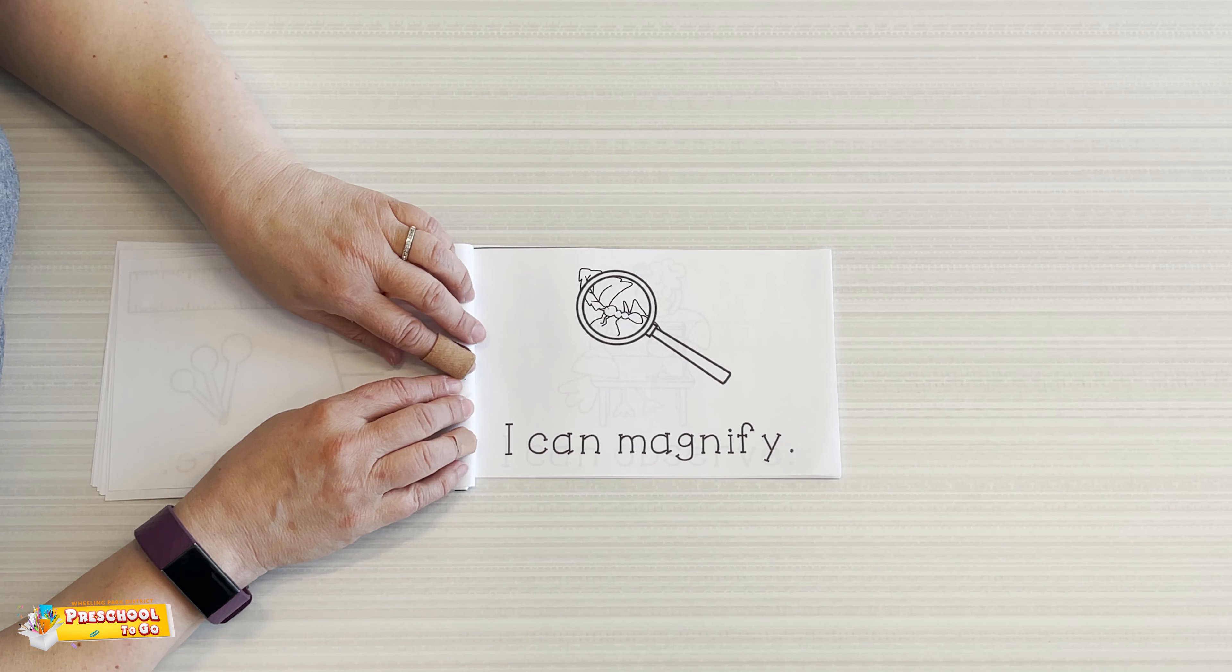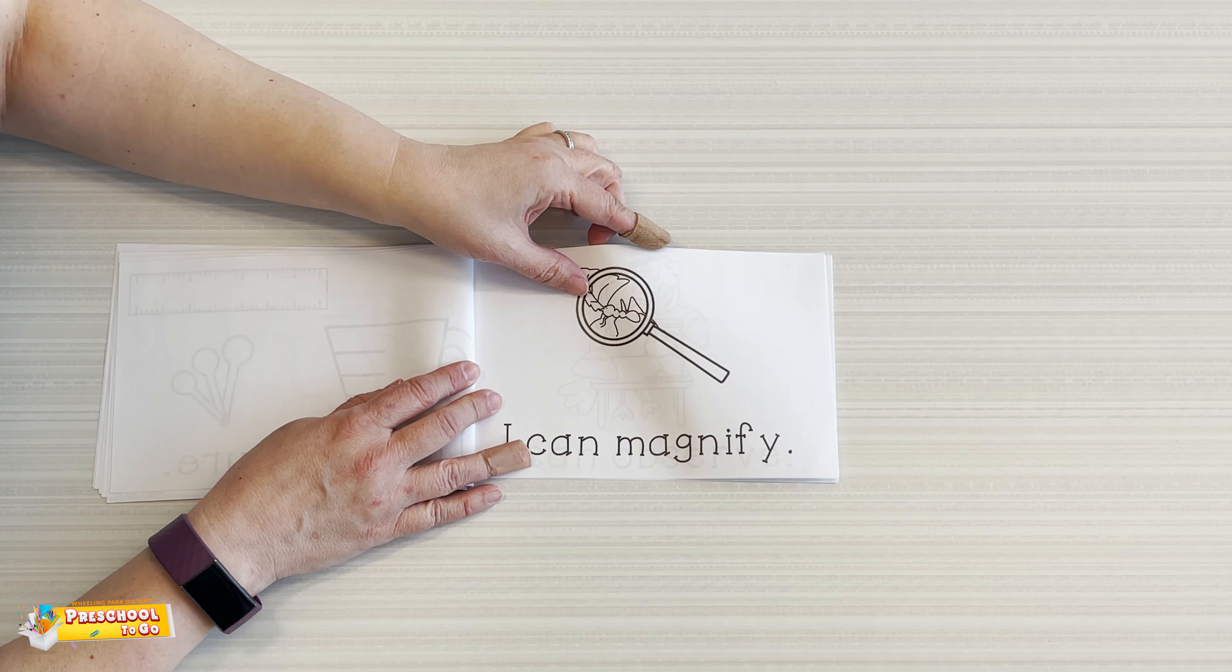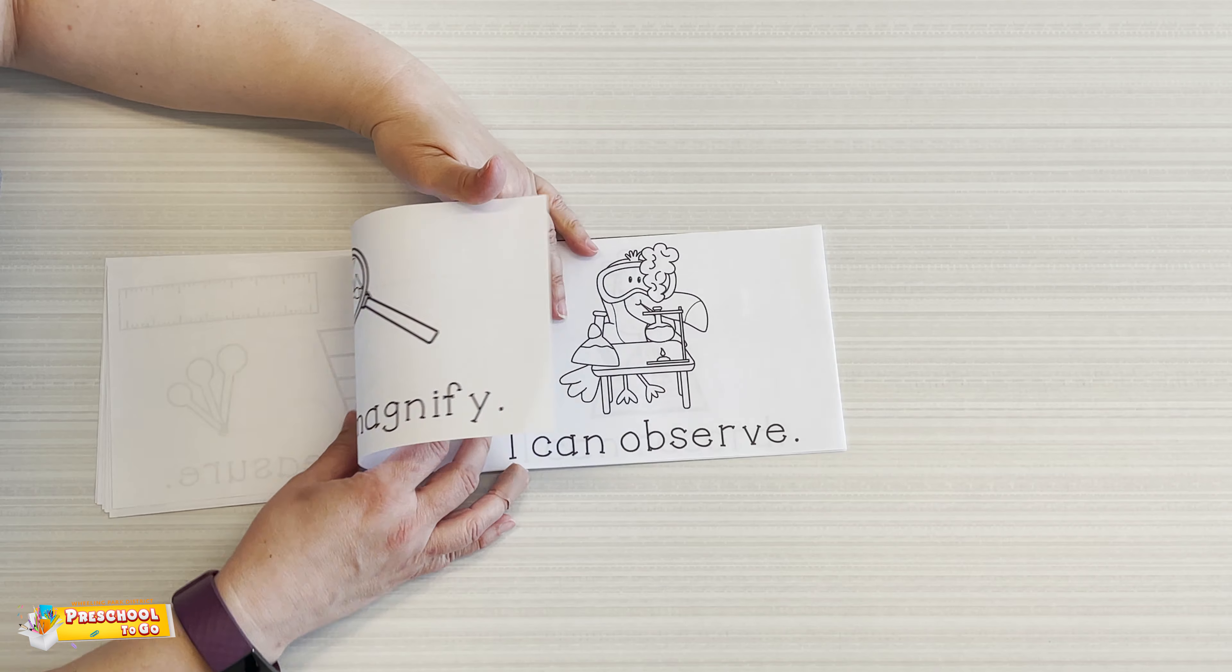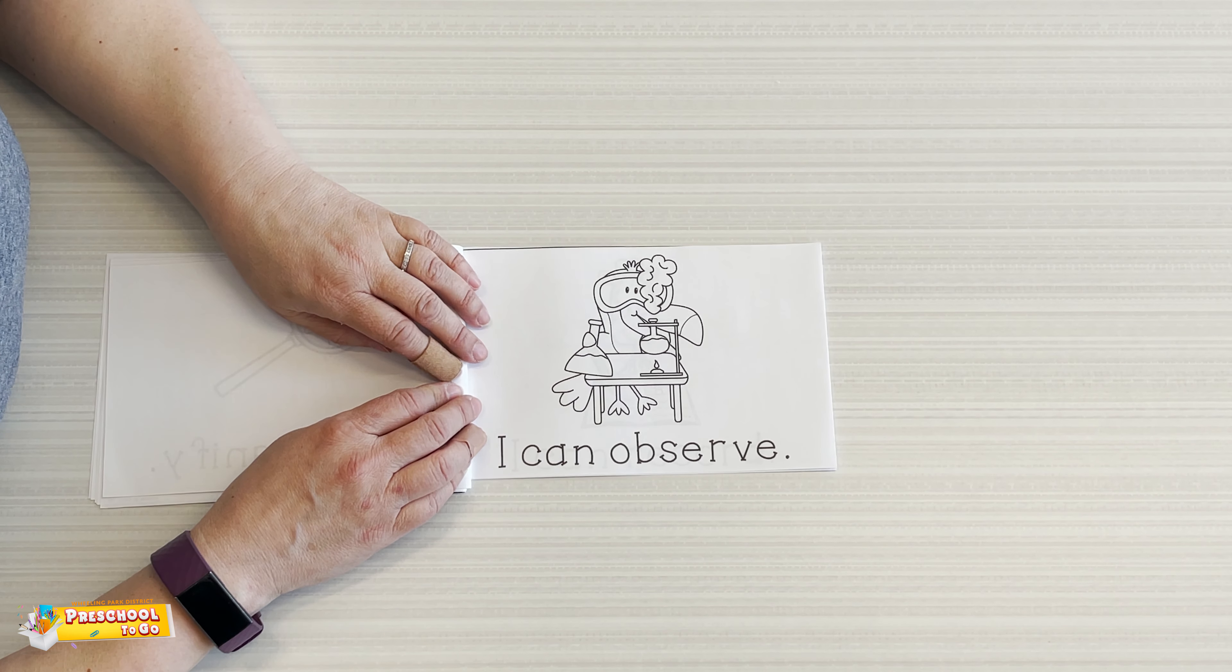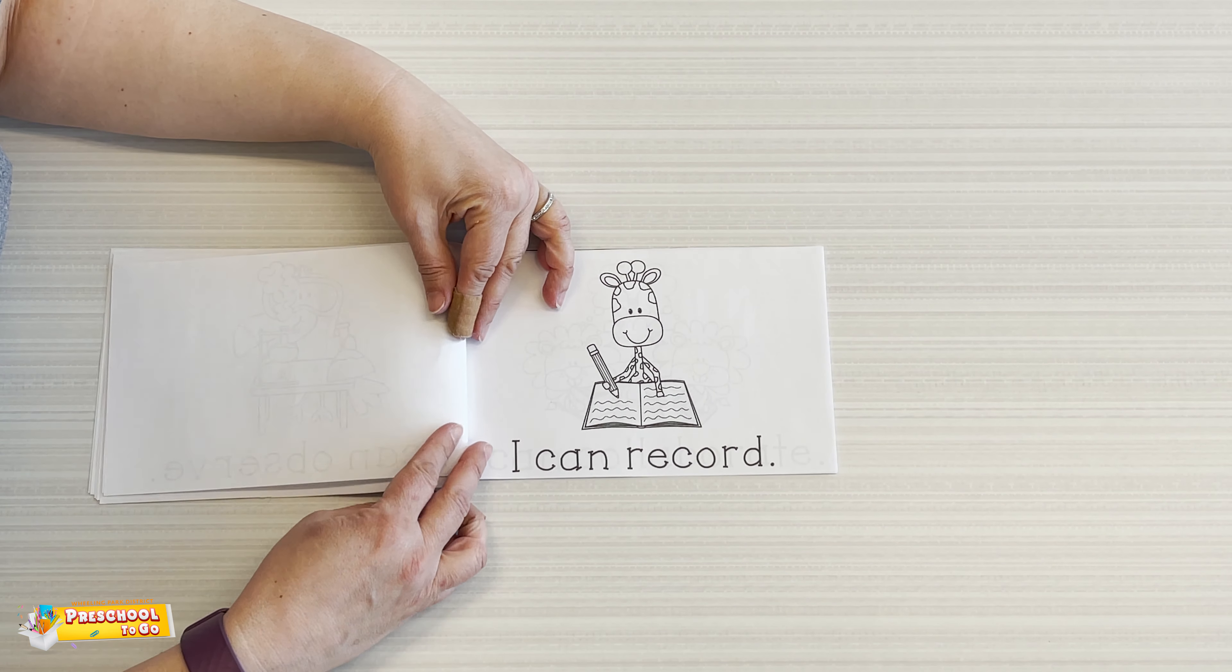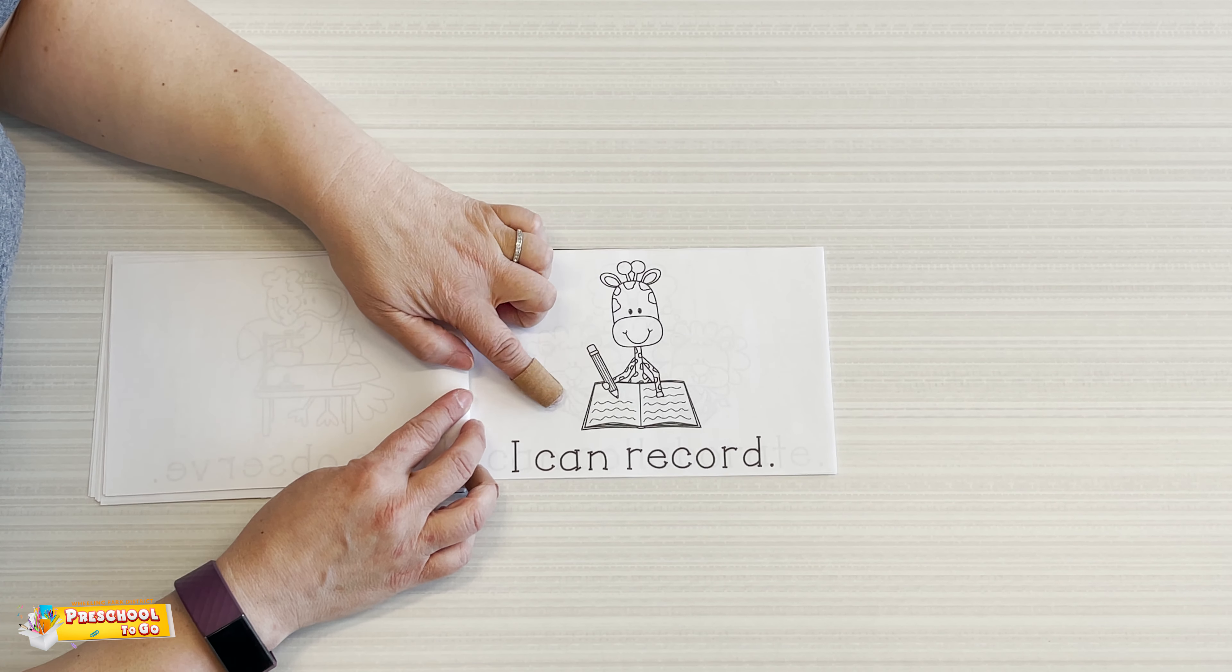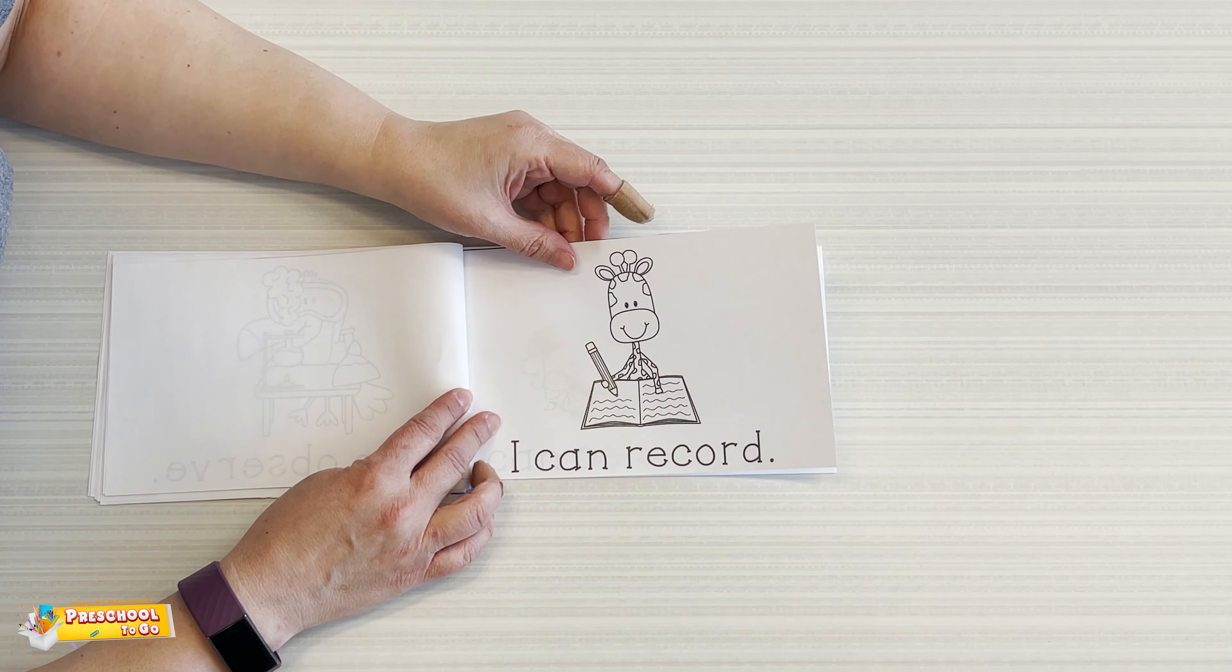I can magnify using a magnifying glass, makes things bigger to check out your area. I can observe, meaning I can look at things and see what I see. I can record, meaning I can write things down or draw a picture or find a picture that I can put down on paper.